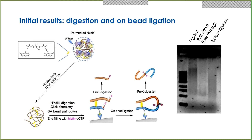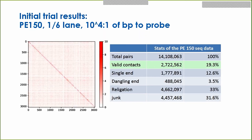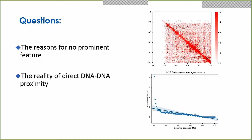We prepared the library and submitted our results for initial, not very deep sequencing. As you can see, the map looks very different from a Hi-C map — it does not have the prominent features often seen in Hi-C. We have 2 million valid contacts, accounting for about 20%. We then considered the reasons for the lack of prominent features: possibly our probe is too short, the probe-to-DNA ratio is not optimal, the shearing procedure introduced junk or re-ligation contamination, or there is random ligation on the beads.